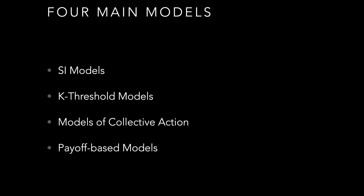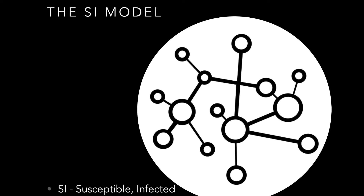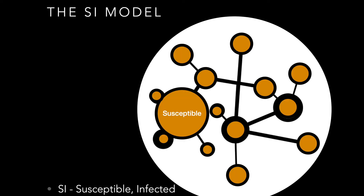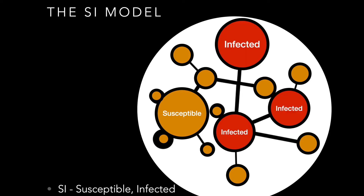The SI model — where SI stands for susceptible or infected — involves some network structure where at the beginning all nodes are susceptible to some contagion, be it a disease, meme, or new idea. After some amount of time, some of these nodes become infected, and how this spreads from infected nodes to susceptible nodes becomes the quantity of interest.